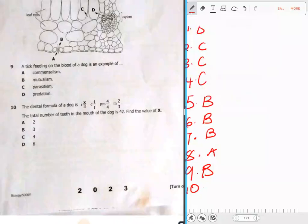Here is how we are going to do it. We have the total number of teeth in the mouth is 42. We are going to add everything and multiply by 2, and equate it to 42. Why? Because when we talk of the dental formula, it is only concerned with half of the mouth. On top there I've got X plus 1 plus 4 plus 2.